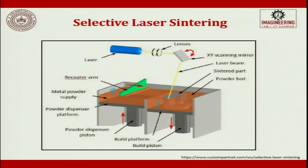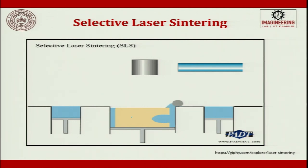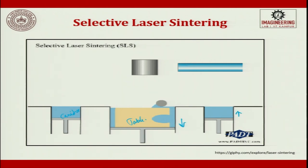This is the powder dispenser platform and build platform. A build piston reduces the height of the object layer by layer. Instead of metal powder, you can use ceramic powder or polymer powder depending on the wavelength and requirements. In the animation of the process, the laser activates after the roller smears powder across the table; the can goes down and up alternately, enabling the possibility of generating functionally graded material.